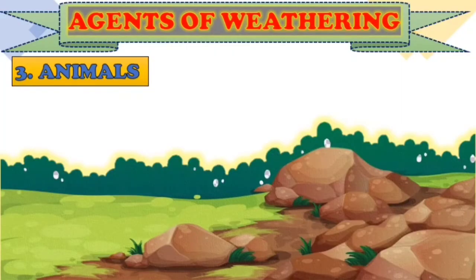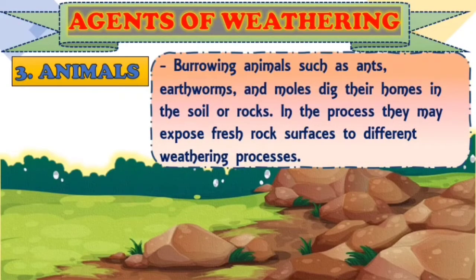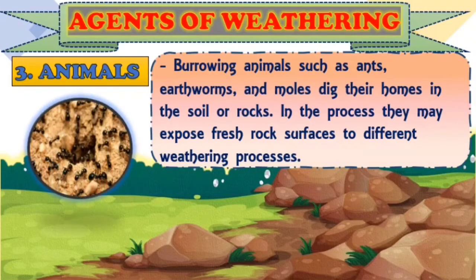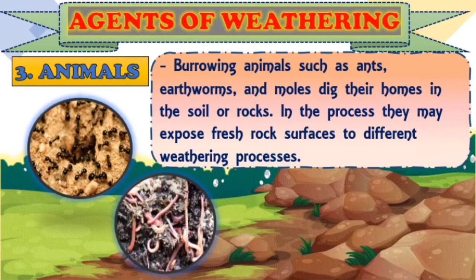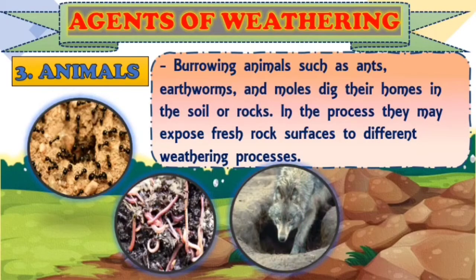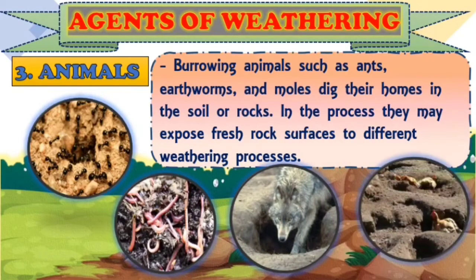Number three agent of weathering is animals. Burrowing animals such as ants, earthworms, and moles dig their homes in the soil or rocks. In the process, they may expose fresh rock surfaces to different weathering processes. Other animals like chickens, dogs, or some wild animals may scratch on rock surfaces and also expose them to further weathering processes.